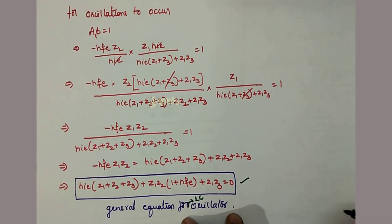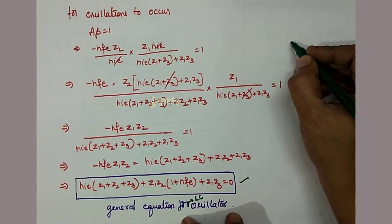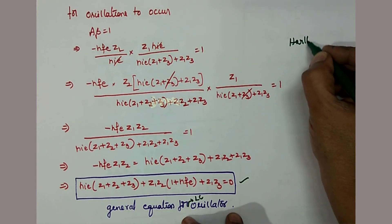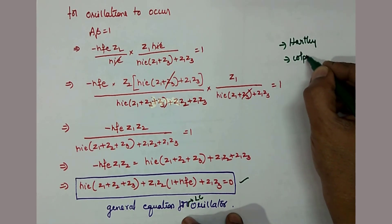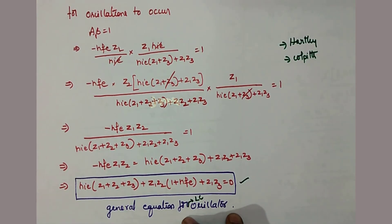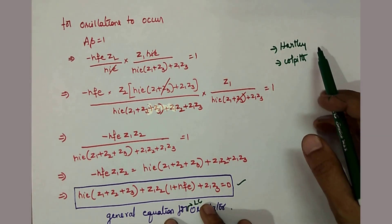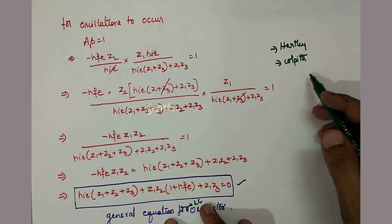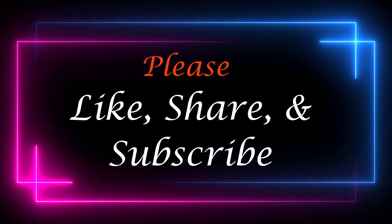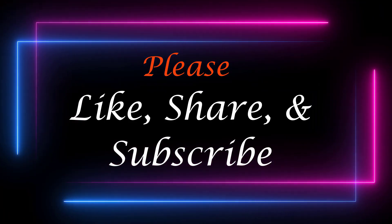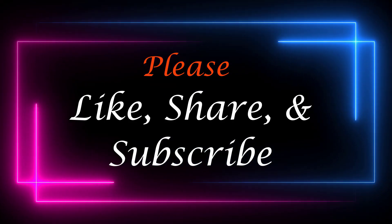Using this general equation, we will analyze two types of LC oscillators: one is the Hartley oscillator, and another is the Colpitts oscillator. Thank you very much.